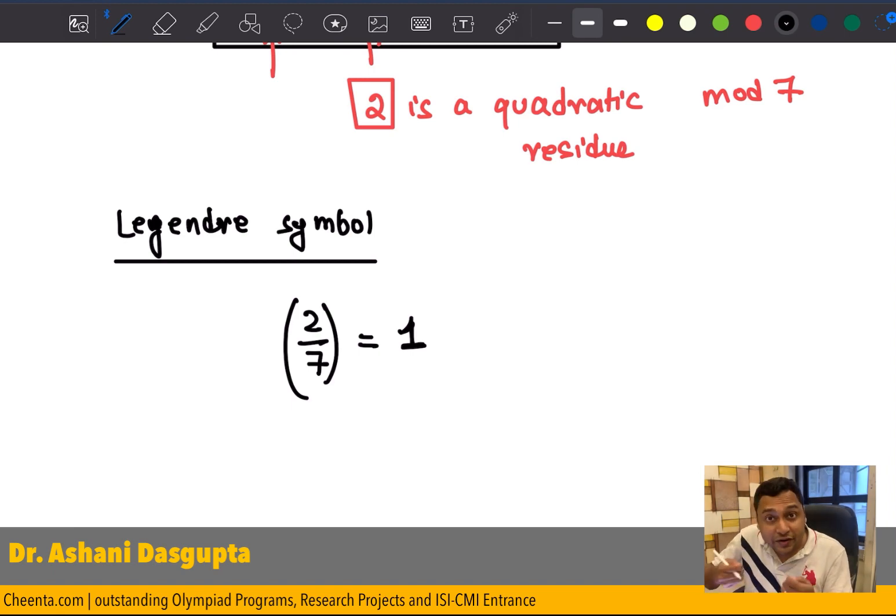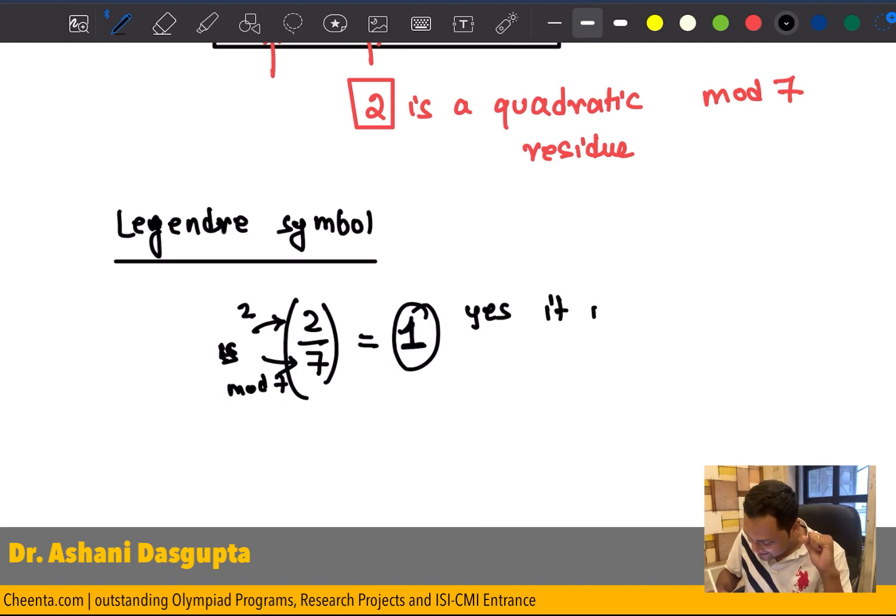We write it as 2 by 7 is equal to 1. So, how do you read this? You read this as, 2 is, so this little bar, the division kind looking sign, is just a short form of is, mod 7, the lower number. Yes, 1 says yes, it is a quadratic residue.